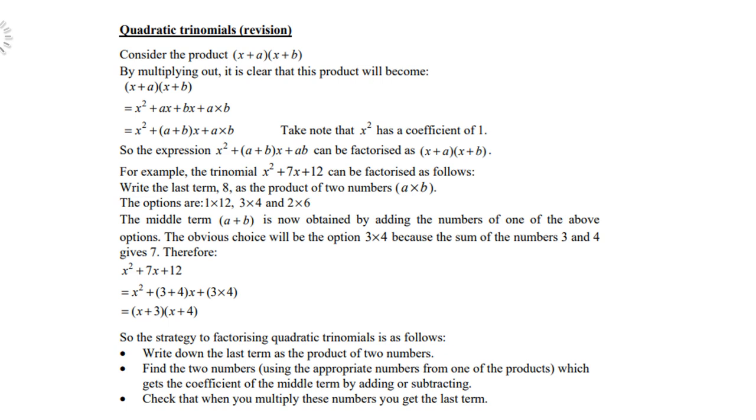The middle term (a + b) is now obtained by adding the numbers of one of the above options. The obvious choice will be the option 3 times 4, because the sum of the numbers 3 and 4 gives you 7. Therefore, x² + 7x + 12 is the same as x² + (3 + 4)x + 3 times 4. So the factors for x² + 7x + 12 is therefore (x + 3)(x + 4).